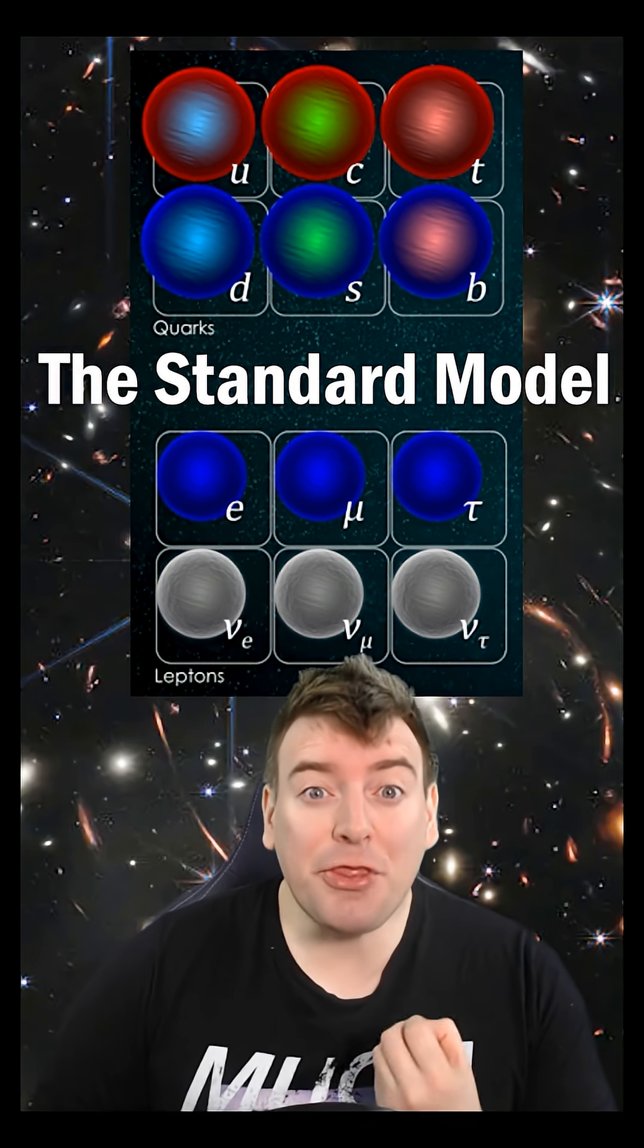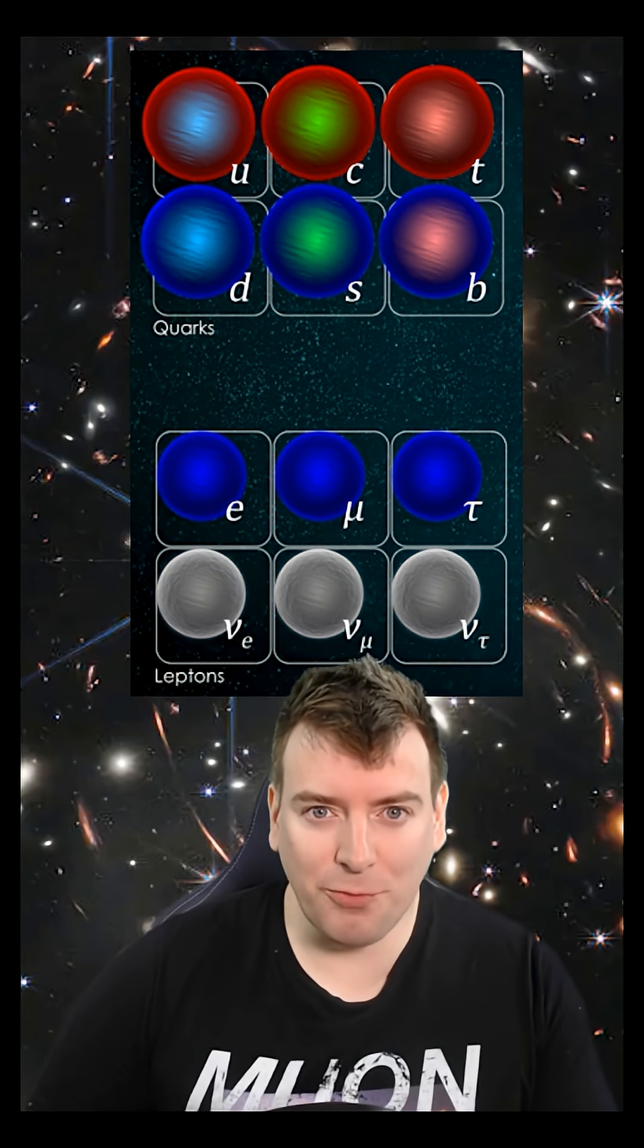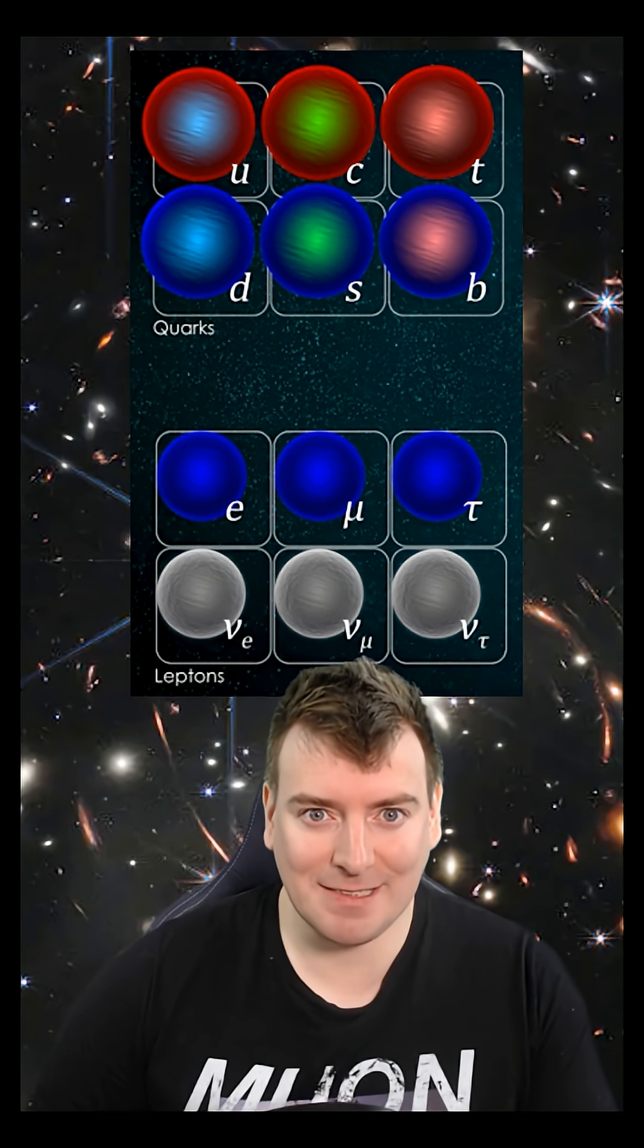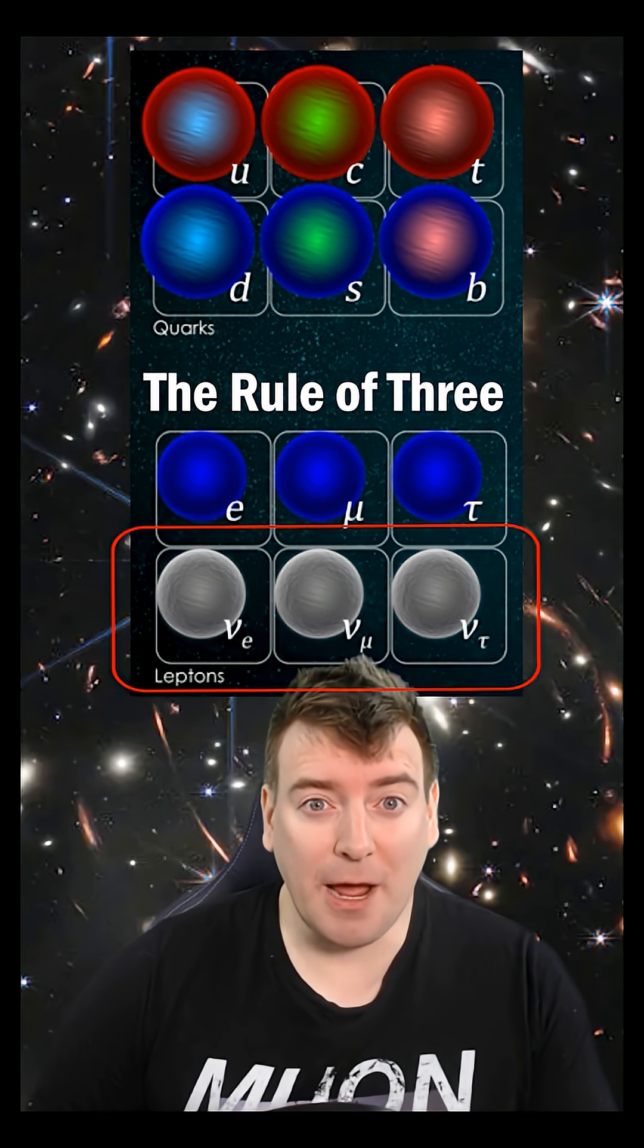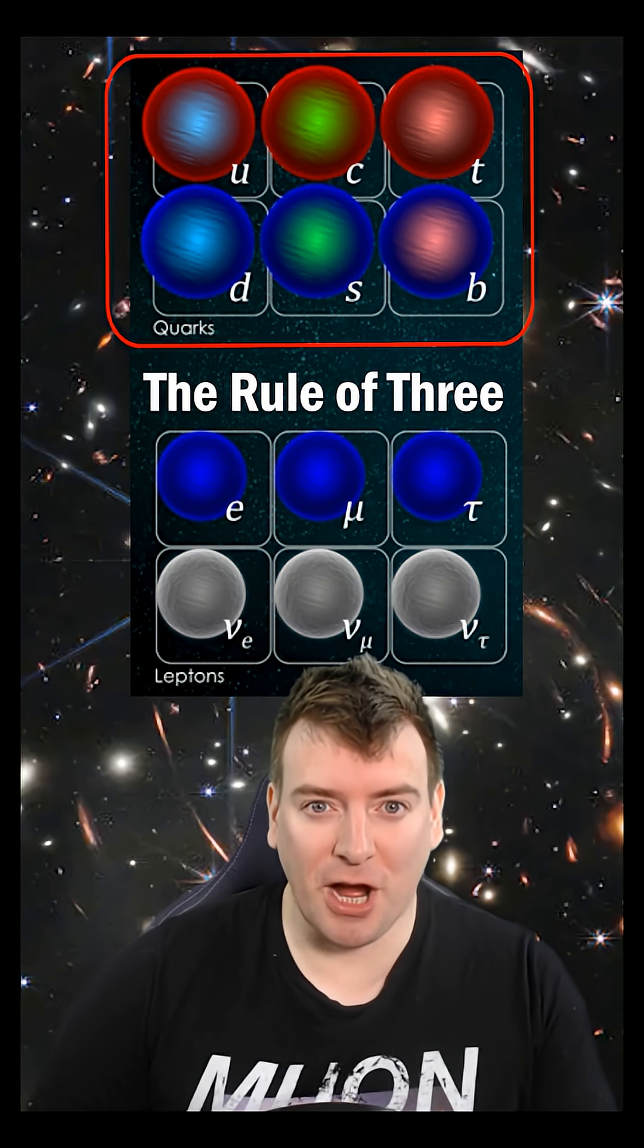But intriguingly, there are three separate generations of matter particles, copies of one another that differ only in mass: three copies of the neutrino, three copies of the electron, and three pairs of differently charged quarks.